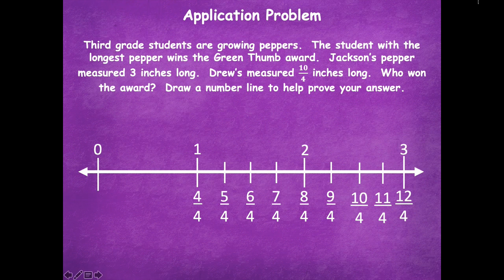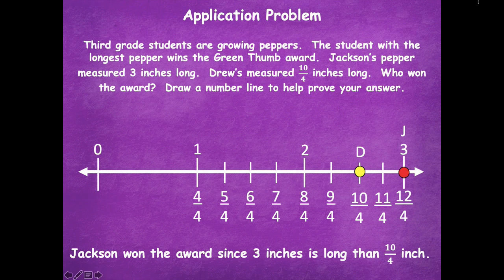And twelve-fourths. Now that I have all of that labeled, I'm able to label Jackson's pepper and Drew's pepper. Here is Drew's pepper at ten-fourths inches, and Jackson's pepper is here at three inches. Based on my number line, Jackson won the award since three inches is longer than ten-fourths inches — it's further from zero, so that helps us determine the correct answer.